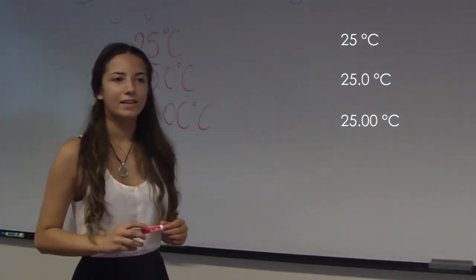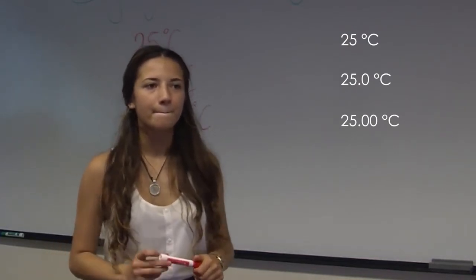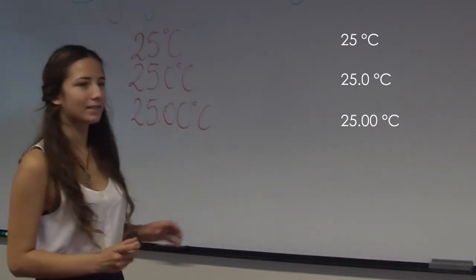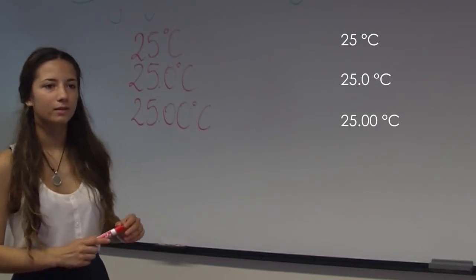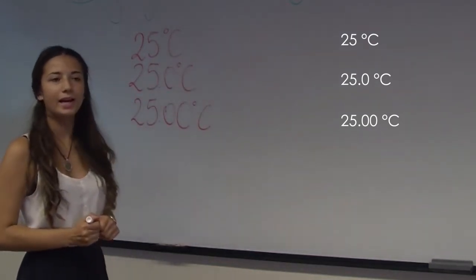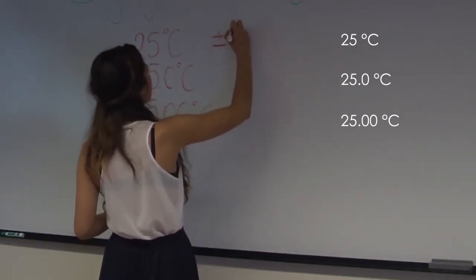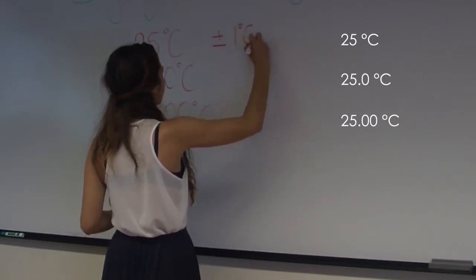Each of these gives you a different implication of how precisely I know the temperature. Because the number has to be rounded at some point, the first one implies that the temperature is definitely between 24 and 26 degrees. So that's an uncertainty of plus or minus 1 degree C.